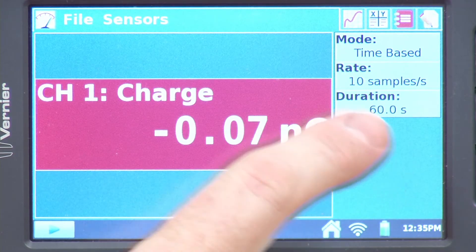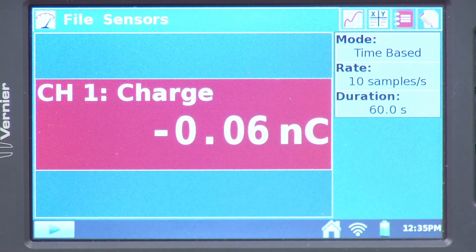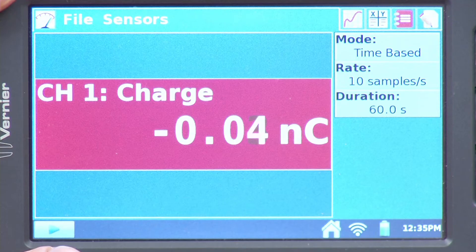I'm going to use the standard setup, 10 samples per second, with a duration of 60 seconds for this experiment. At this point, I'll actually be able to begin data collection. I'm going to hit Collect,